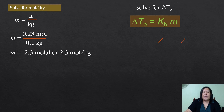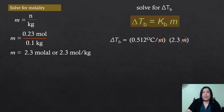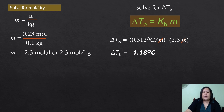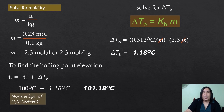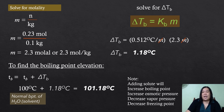Then solve for the boiling point elevation: delta T_b equals 0.512 degrees Celsius per molality times 2.3 molal. Since the solution is a non-electrolyte, the Van't Hoff factor of 1 is understood and not written separately. The boiling point elevation is 1.18 degrees Celsius, so the boiling point of the solution is 100 plus 1.18, which equals 101.18 degrees Celsius. Take note: adding solute will increase the boiling point, increase osmotic pressure, decrease vapor pressure, and decrease the freezing point of the solution.